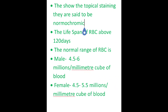The lifespan of RBC is about 120 days. The normal range of RBC is 4.5 to 6 million per millimeter cube in males, and 4.5 to 5.5 million per millimeter cube of blood in females.